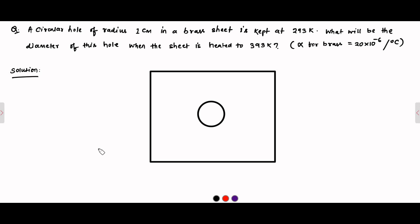Here is another question on thermal expansion of solids. A circular hole of radius 1 centimeter in a brass sheet is kept at 293 Kelvin. What will be the diameter of this hole when the sheet is heated to 393 Kelvin? The coefficient of linear expansion alpha for the brass sheet is 20 into 10 to the power minus 6 per degree Celsius.